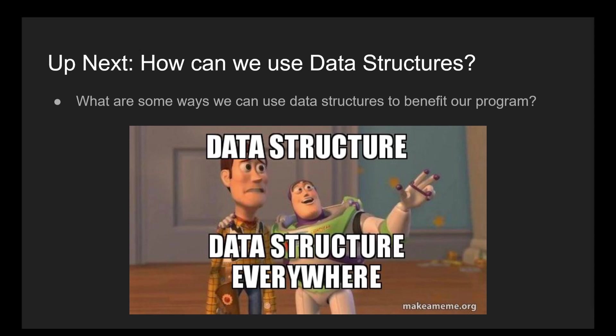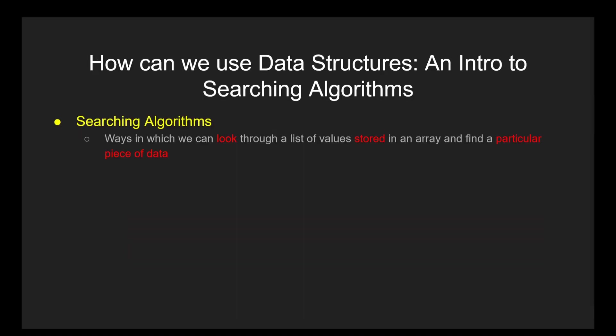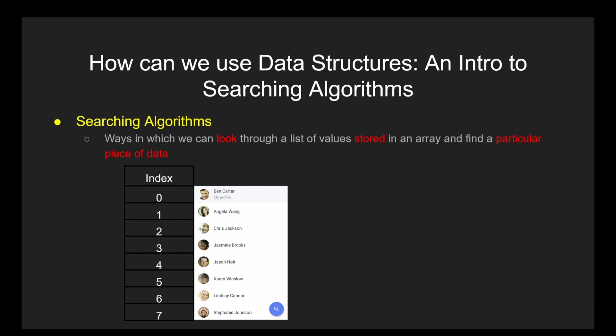Just as there are many ways to store information in computer science, there are even more ways of searching through lists. Searching algorithms at their core are ways in which we can look through a list of values stored in an array — say a patient name list or a high score list — and find a particular piece of data.